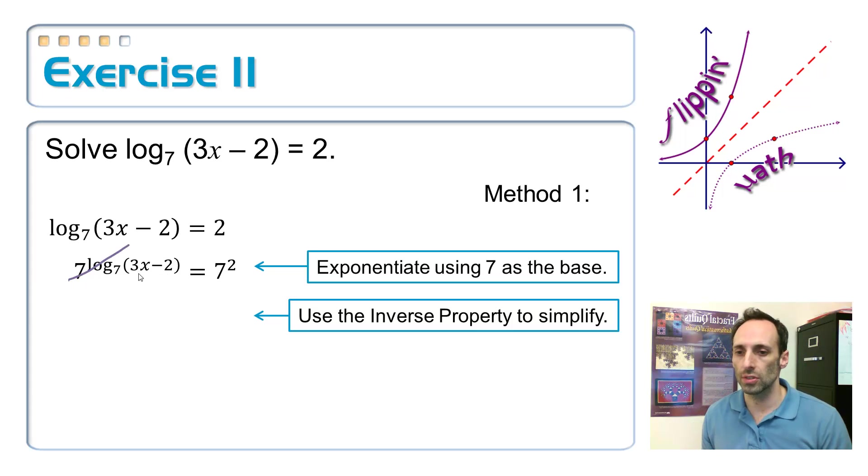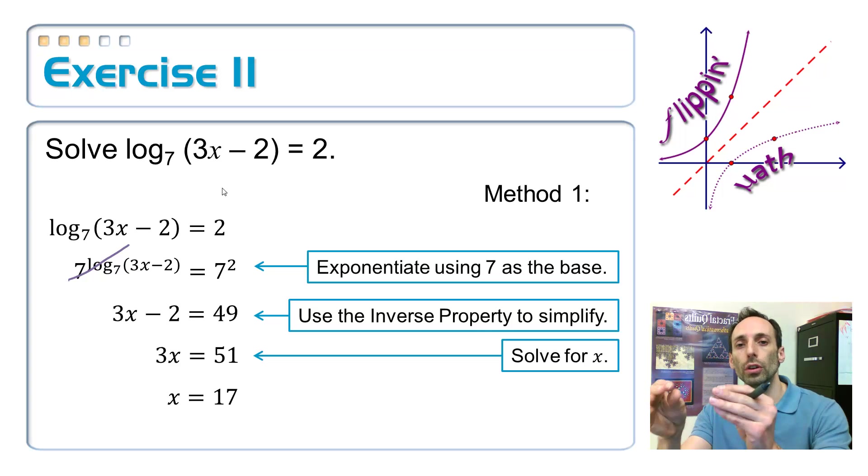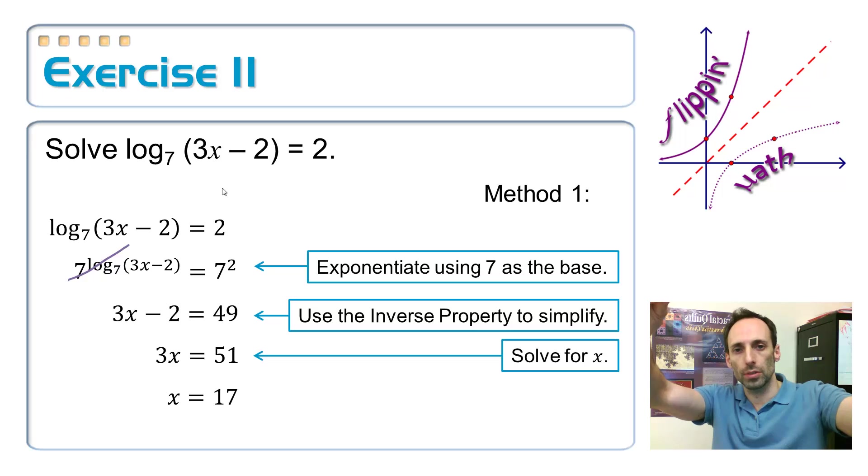So, poof, this thing is gone, and I'm just left with the original input of 3x minus 2. And then you can simplify 7 squared as 49. And then finally, add your 2 over, divide by 3, and x equals 17. So, there's the method that involves what's called exponentiating. You choose the base, and your equation becomes the exponents. The base that you choose is the base of the logarithm.